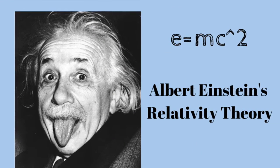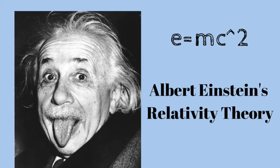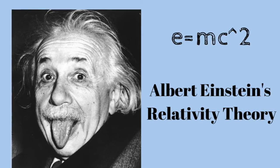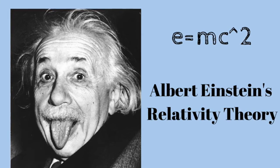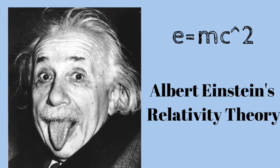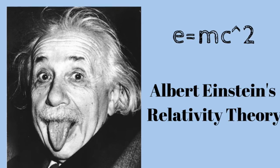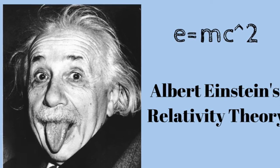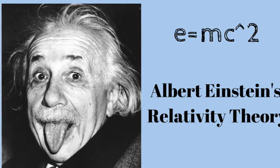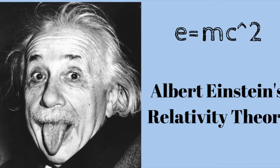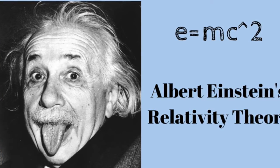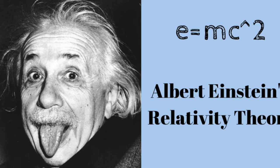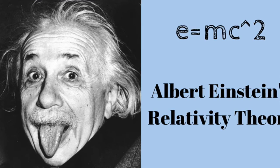An example of a scientific theory is the theory of relativity. It means that the increased relativistic mass of a body comes from the energy of motion of the body — that is, its kinetic energy divided by the speed of light squared. This can be represented in a formula which is E equals mc squared.